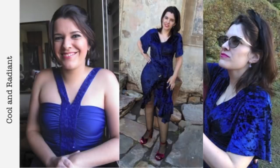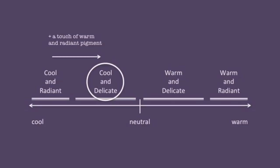But if she were to tan and add her own pigment, she would become warm and radiant. When she adds just a tiny bit of her own warm and radiant pigment, you can think of it as taking an ice cold glass of water and adding a tiny bit of hot water into it — it becomes a little bit warmer, but might still be cool. So she went from cool and radiant, added a touch of her own pigment, and she became cool and delicate.